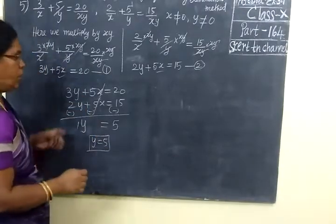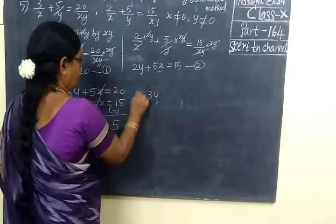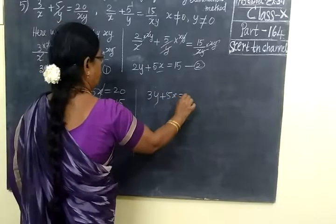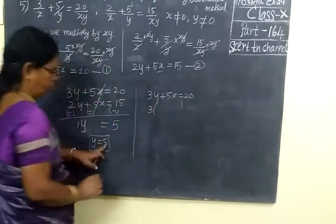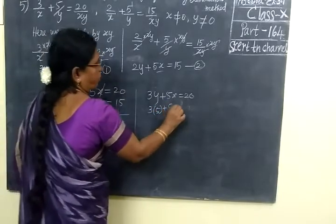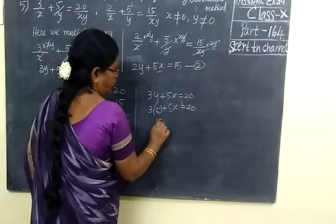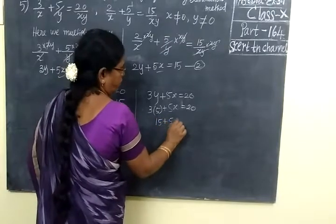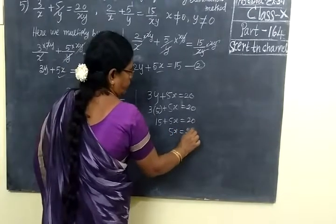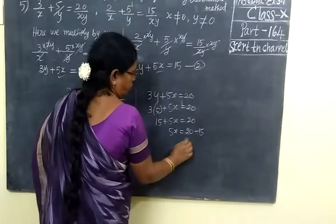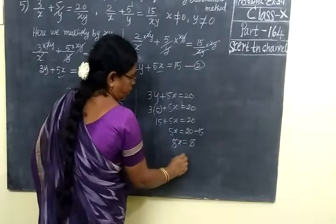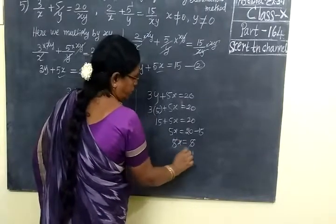You substitute in any one equation. Here you write it as 3y plus 5x equal to 20. So 3 into, y value is 5, that you substitute, 5x equal to 20. So 15 plus 5x equal to 20. So 5x equal to 20 minus 15, so this is equal to 5. So x is 5, 5x equal to 5, so x equal to 1.